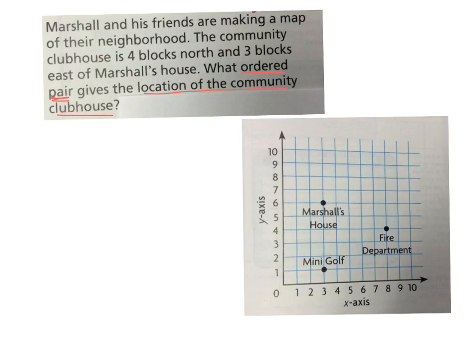What important information do we need in order to solve this problem? We need to know that the community clubhouse is four blocks north and three blocks east of Marshall's house. So here's the map. Do we care where the mini-golf is? No. Do we care where the fire department is? No. Do we care where his house is? Yes. What ordered pair describes where Marshall's house is? Three six. Yeah.